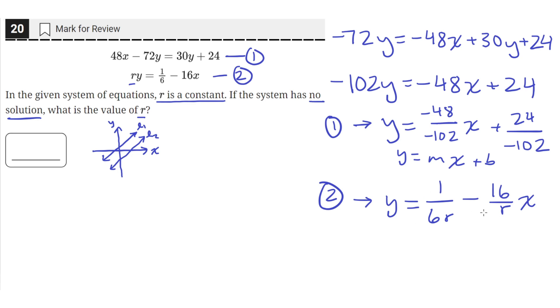And in order for these two equations to have no solution, they need to be parallel, which means the slopes need to be the same. So the slope of the first equation is 48 over 102. The negative divided by negative is just a positive. And that needs to be equal to the slope of the second equation, which is negative 16 over r.